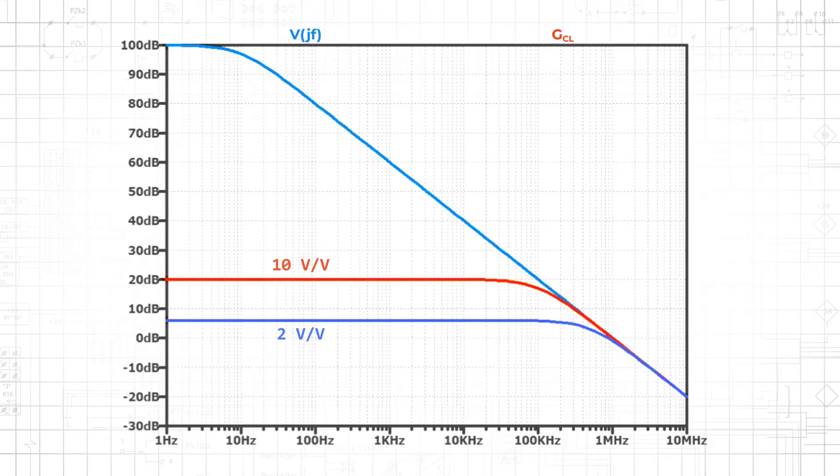That's how the trade-off works. The overall circuit can have less gain and more bandwidth, or more gain and less bandwidth.